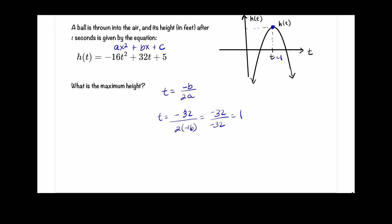Let's plug that into our equation. So h, when t is equal to 1, is equal to negative 16 times 1 squared plus 32 times 1 plus 5. That gives us negative 16 plus 32 plus 5, and that gives us 21 feet. That is our maximum height.